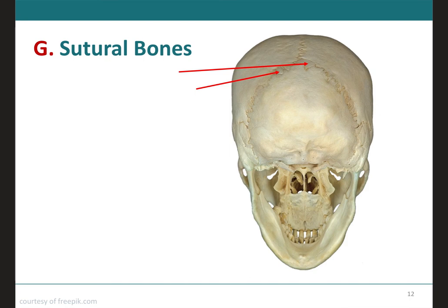The last type of bone is not classified by shape but rather by location. Sutural bones, also called Wormian bones, are small bones located within the sutures or joints of certain cranial bones. The number of sutural bones varies greatly from person to person, and not everyone has them. For example, in the lambdoidal suture between the occipital bone and the parietal bones, you can see these tiny bones — those are your sutural bones.